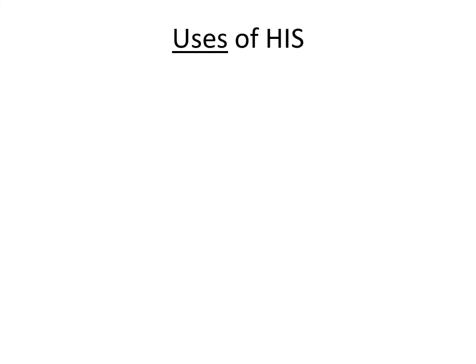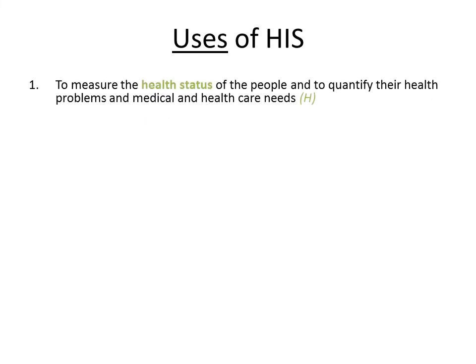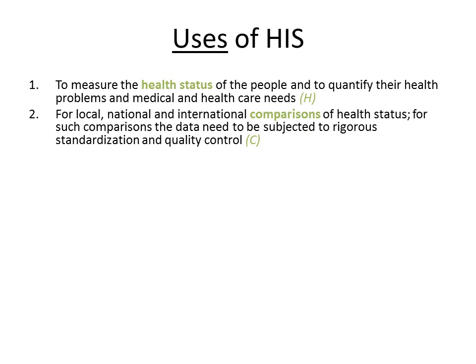What are the uses of health information system? If we have a well-functioning health information system that fulfills the requirements we discussed, the foremost use is to measure the health status of the population and to quantify their health problems and medical and healthcare needs. It is also used for comparison of health status of different states within a country, different areas within states, and from country to country. For such comparison, the data needs to be standardized.